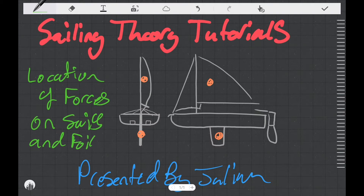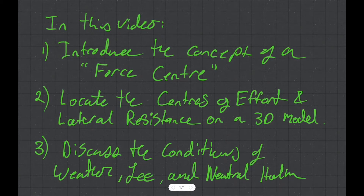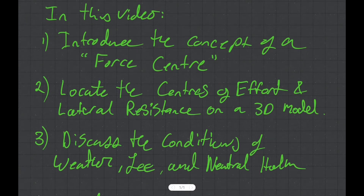We're going to refer to these locations as the CE and CLR. In this video I'm going to introduce the concept of a force centre and we're going to define the centres of effort and lateral resistance. We're going to locate the centres of effort and lateral resistance on a 3D model sailboat. Lastly, we're going to discuss the conditions of weather, lee and neutral helm and how they relate to the positions of the centres of effort and the centre of lateral resistance.